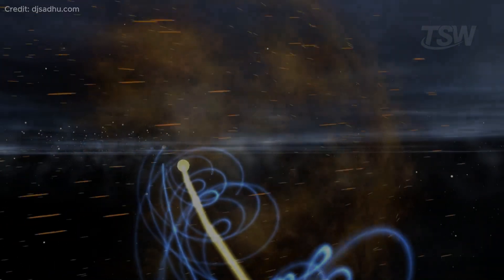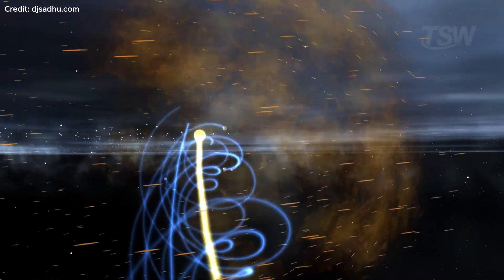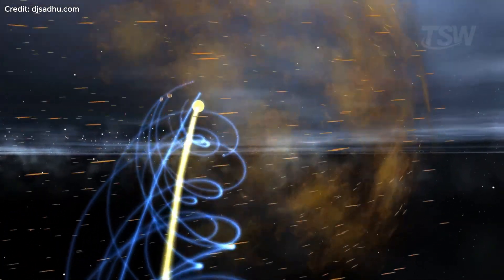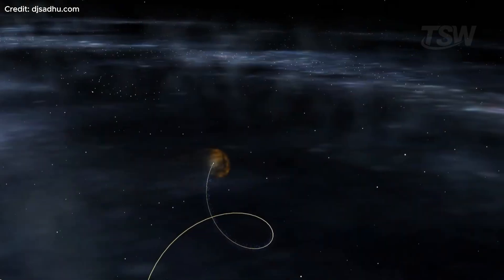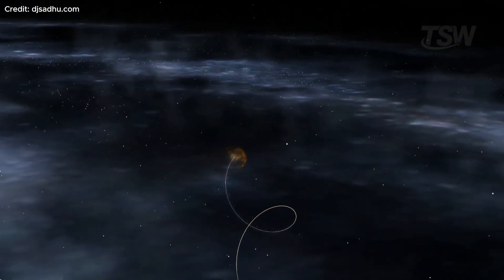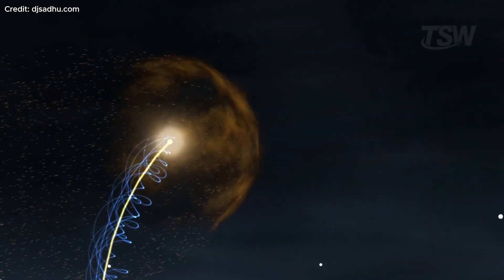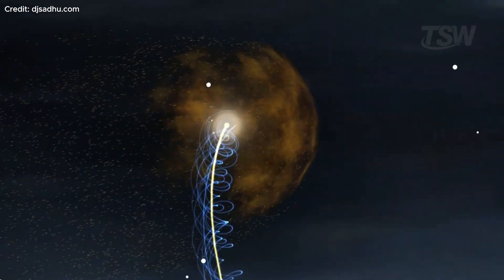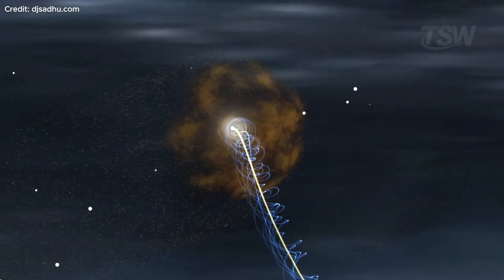The solar system doesn't move in a straight line. As it advances, it also oscillates up and down relative to the galactic plane, as if it were surfing a giant wave of energy and stardust. This oscillation happens every 30 million years and is so subtle we can't perceive it, but it's happening all the time.